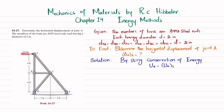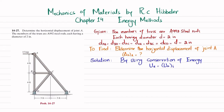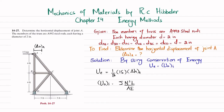We will use conservation of energy. Due to this load, joint A will move delta H A. The external work is 1/2 times P times the horizontal displacement of A, which equals the axial strain energy in the truss. So U_E equals 1/2 multiplied by 15 (the load) into horizontal displacement of point A. The strain energy due to axial loading equals the sum of N squared times L divided by AE, and we have six members.